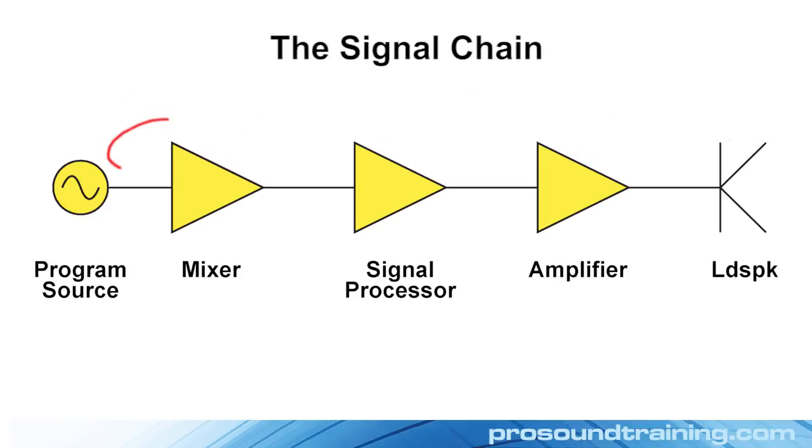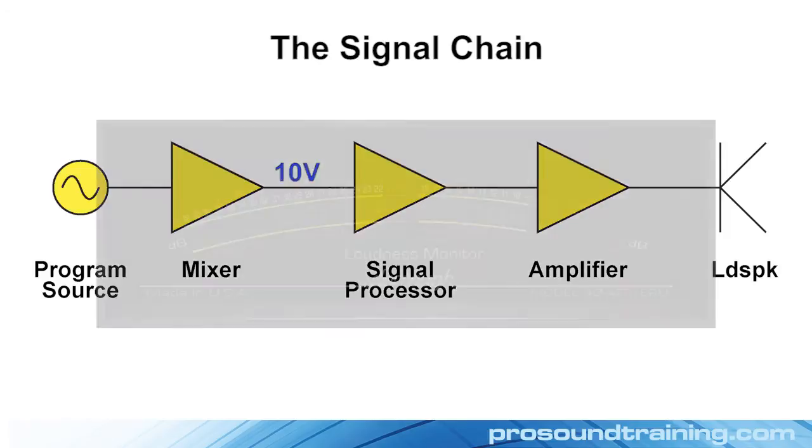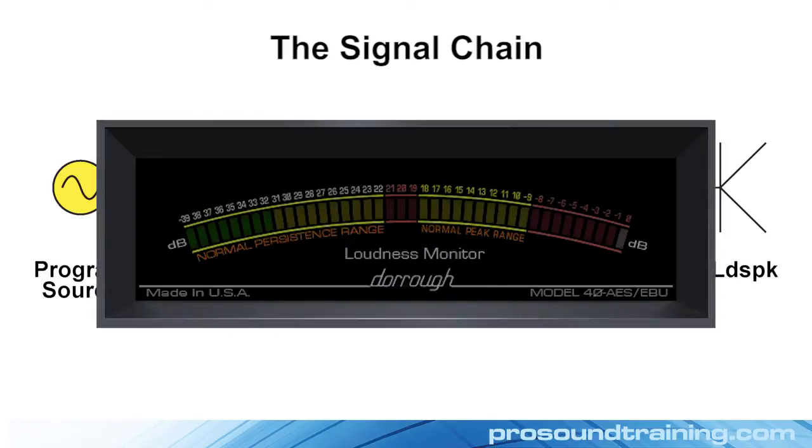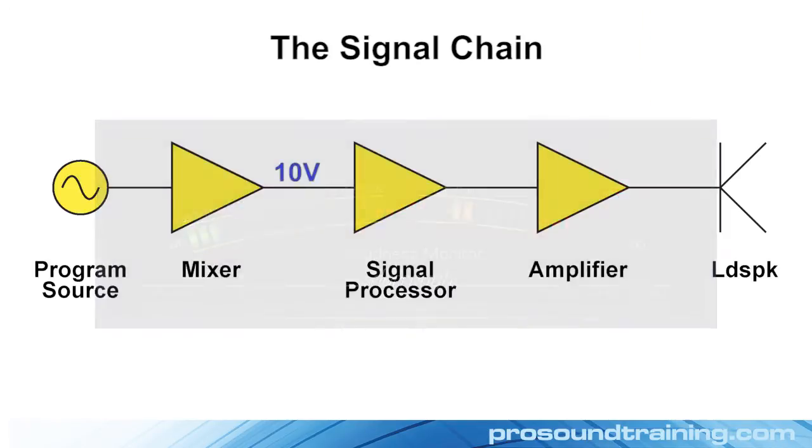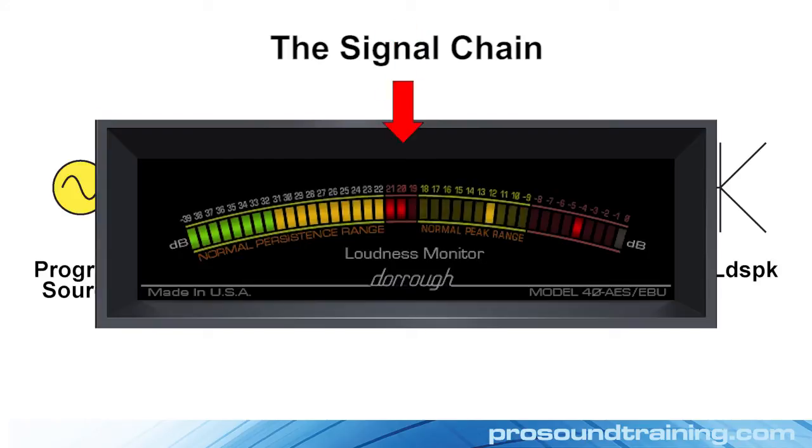Since the mixer is sort of the brain of the sound system, I'll start there. Traditionally, an analog mixer has a max output voltage of about 10 volts. That's usually found using a test tone, like a 1 kilohertz sine wave. Real-world audio signals have an average level along with signal peaks, and the 10 volts puts a limitation on the peaks.